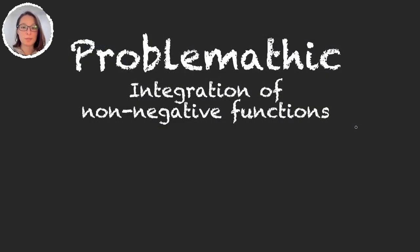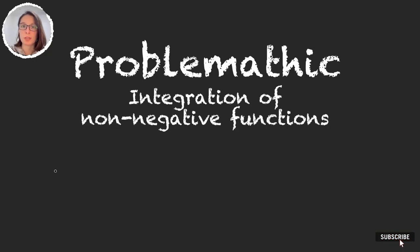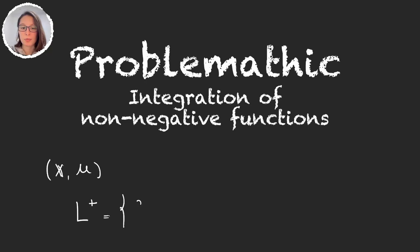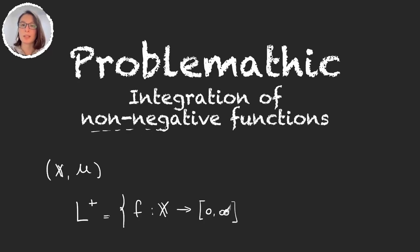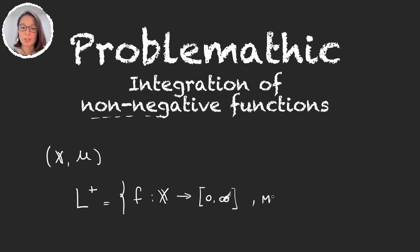Now let's start. We want to integrate measurable functions, so let's say we are on a measurable space (X, M), where M is the sigma algebra. We will use the notation L+ for functions that go from our set into [0, ∞), because we're first going to integrate non-negative measurable functions and then generalize.